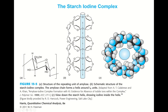Starch is a polymer made of glucose — glucose is the monomer. When glucose units are connected, the polymer inevitably takes the form of a spiral or helical structure, similar to the alpha-helical structure of amino acids.